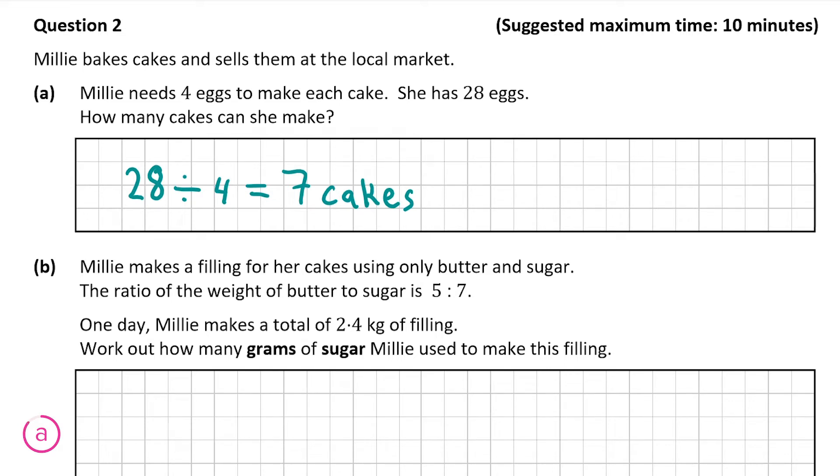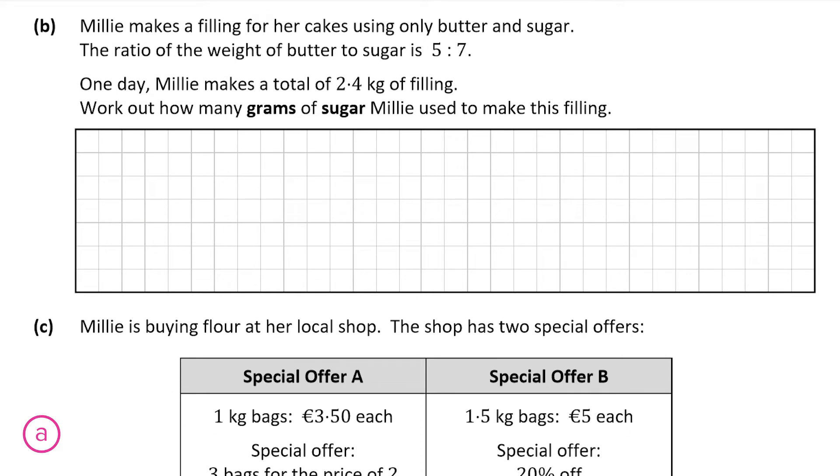Now let's move on to part B. Millie makes some filling for her cake with only butter and sugar. The ratio of butter to sugar is 5 to 7. One day she makes a total of 2.4 kg of filling. We have to work out how many grams of sugar Millie used to make the filling. Be careful it says grams. The first thing I'll do is convert 2.4 kg into grams. So 2.4 kg is 2,400 grams.